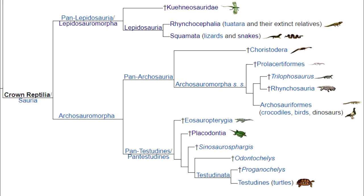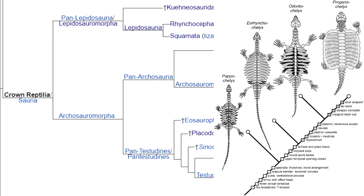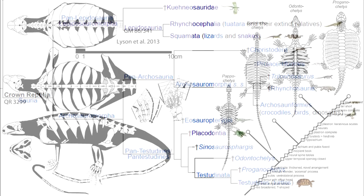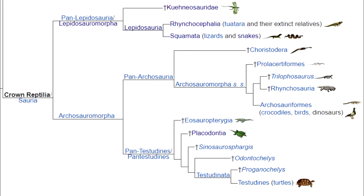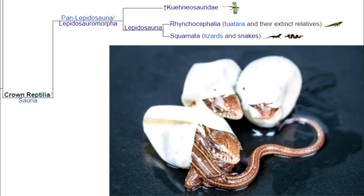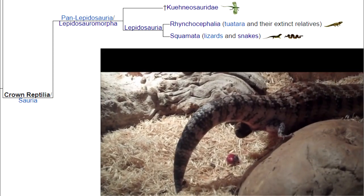Sadly, the only archosauromorphs we have left are birds and a few crocodilians. Oh, and turtles — because it turns out that turtles are also in that group, where they were once thought to be the last living anapsids. A fossil stem turtle with no shell, originally diapsid with two temporal fenestrae, confirmed this, but those holes closed up in later species as turtles returned to the sea and adopted more and heavier armor. One of the traits that typify archosaurs is that their eggs have hard but fragile shells, whereas the other group — lepidosauromorpha — have softer, more pliable, leathery shells, if they have shells at all, because many species give birth live.